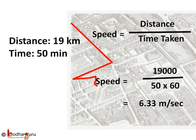In the earlier example, you travelled 19 km or 19,000 meters in 50 minutes, that is equal to 50 into 60 seconds. So speed is equal to distance by time, which is equal to 19,000 divided by 50 into 60, which comes out to be 6.33 meter per second. We converted everything in meter and second — so that was your average speed.